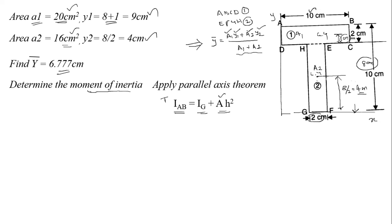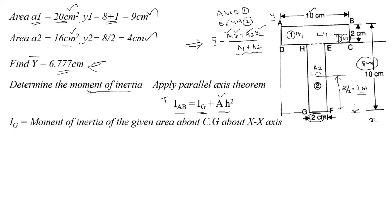H is the distance between the overall center of gravity (Y-bar) and the centroid of each rectangle. For section 1, H1 = Y-bar − Y1; for section 2, H2 = Y-bar − Y2. The formula for IG about the XX axis is BD³/12. For section 1: IG1 = 10×2³/12 = 6.67 cm⁴.